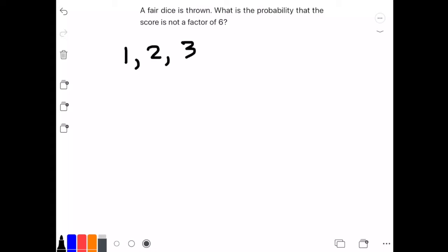there's going to be 6 outcomes: 1, 2, 3, 4, 5, and then 6. We're going to put 6 in the denominator of our fraction because it's the total outcomes we get.